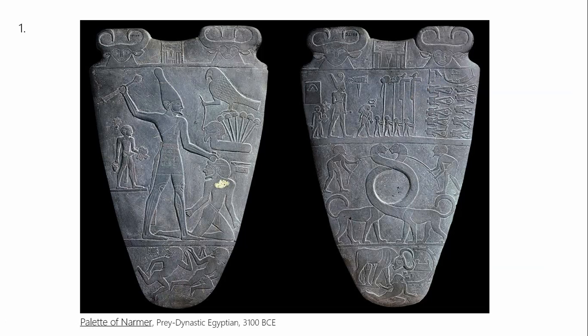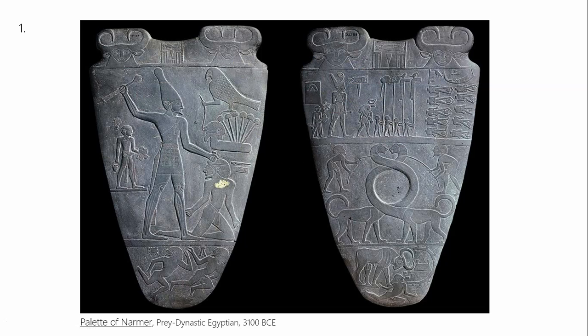We also have evidence that at some point it might have been used as part of a standard, like something that would have been held on a pole. It is named after Narmer, who is a pharaoh or king of Egypt that may or may not have existed. At least it names him as Narmer and names Narmer as the person who united Upper and Lower Egypt. So we see evidence of the unification of Upper and Lower Egypt — probably the most important part is that he's wearing the crown of one part of Egypt and then of the other.